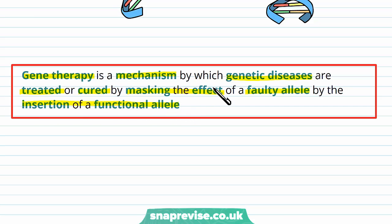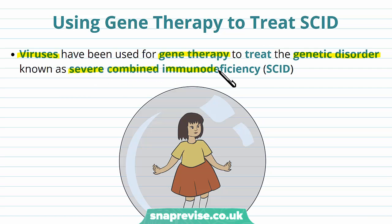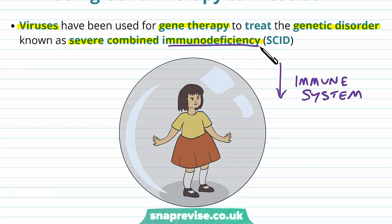So we're taking the faulty allele and replacing it with a healthy allele which can make the healthy working protein. One example of using gene therapy has been used to treat a disease called SCID, and we've been using viruses for gene therapy to treat this genetic disorder. SCID stands for severe combined immunodeficiency. This disease essentially means that an individual has a very poor immune system — immunodeficiency — and it's a very severe condition.